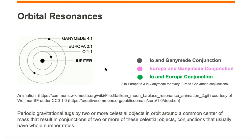We're going to look at an example of the Galilean moons in orbit around Jupiter, namely Io, Europa, and Ganymede. For Io, we've got a 1:1 ratio, indicating an orbital period. The orbital period of Io is 1 to 1. Europa's orbital period is 2 to 1 — Europa takes twice as long to orbit Jupiter as Io does. Ganymede is 4 to 1 — it takes four times as long to orbit Jupiter as Io does, hence the 4 to 1 ratio.